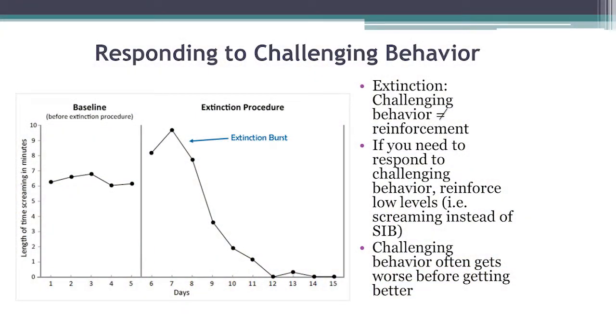This graph shows an example of what it can look like — what it usually does look like — when extinction is used. There is something called an extinction burst. Baseline levels, before we start intervention, show where the challenging behavior is at. Once we start extinction, we often see a spike in challenging behavior. We may also see other behaviors we haven't seen before, because what had been working to get them what they want is no longer working. So we see an increase — they're trying harder, they're trying other things to get what they want.